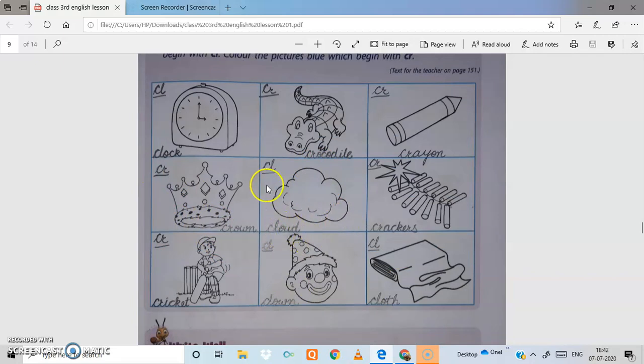What is this? Cloud, CL blend. Crackers, CR, CR blend. Cricket, CR blend. Clown, CL blend. Cloth, CL blend.